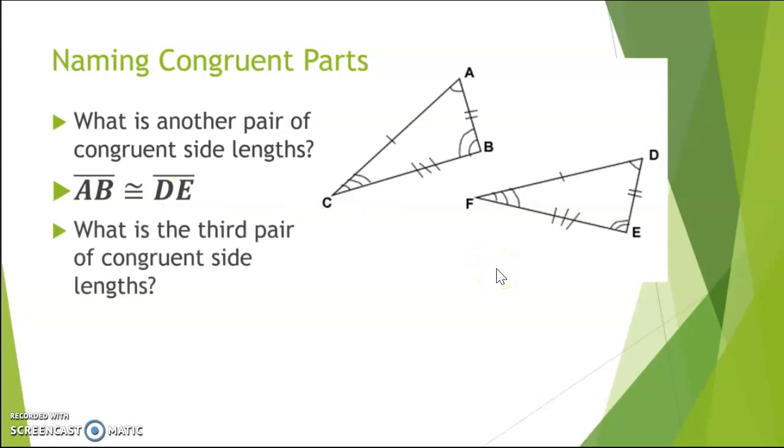What about the third pair of congruent side lengths that is congruent? All right, awesome. So CB across the bottom of that first triangle, and FE across the bottom of that second triangle, are congruent side lengths, and it has been marked that way because they both have three hash marks.